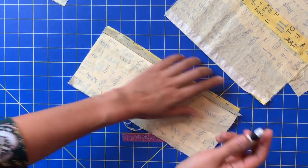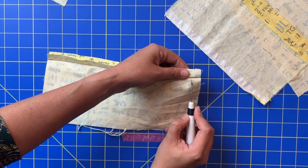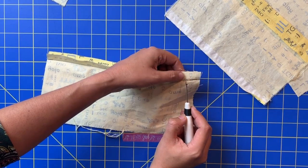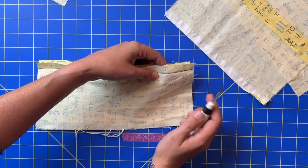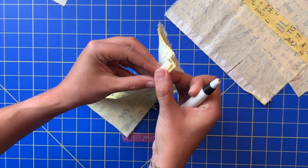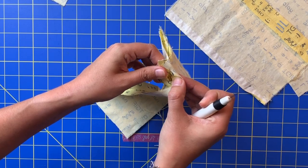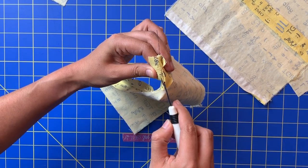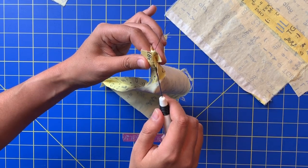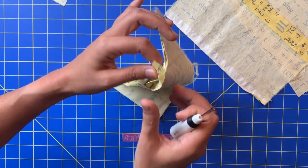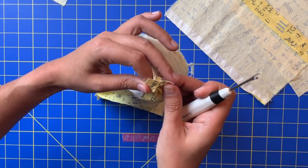One is to take your seam ripper and to place it underneath the threads. I go every inch or so, skipping along until I'm able to pull some of them apart like so and then kind of keep that going and carefully ripping them out.